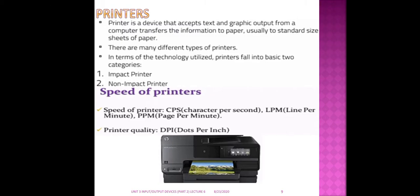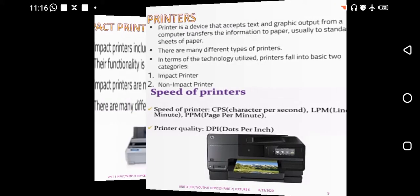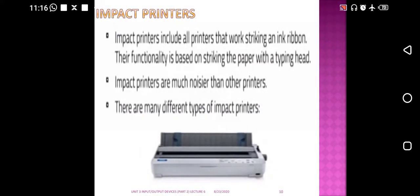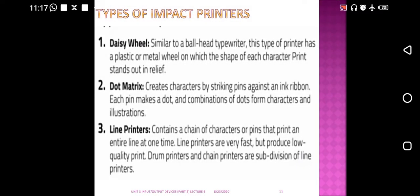We have printers, which are also output devices because they give output in hard copy on a sheet of paper. There are two types of printers: impact and non-impact. The speed of a printer is measured in characters per second, lines per minute, and pages per minute. Quality is measured in dots per inch. Impact printers use striking and an ink ribbon, and they are noisier than non-impact printers.